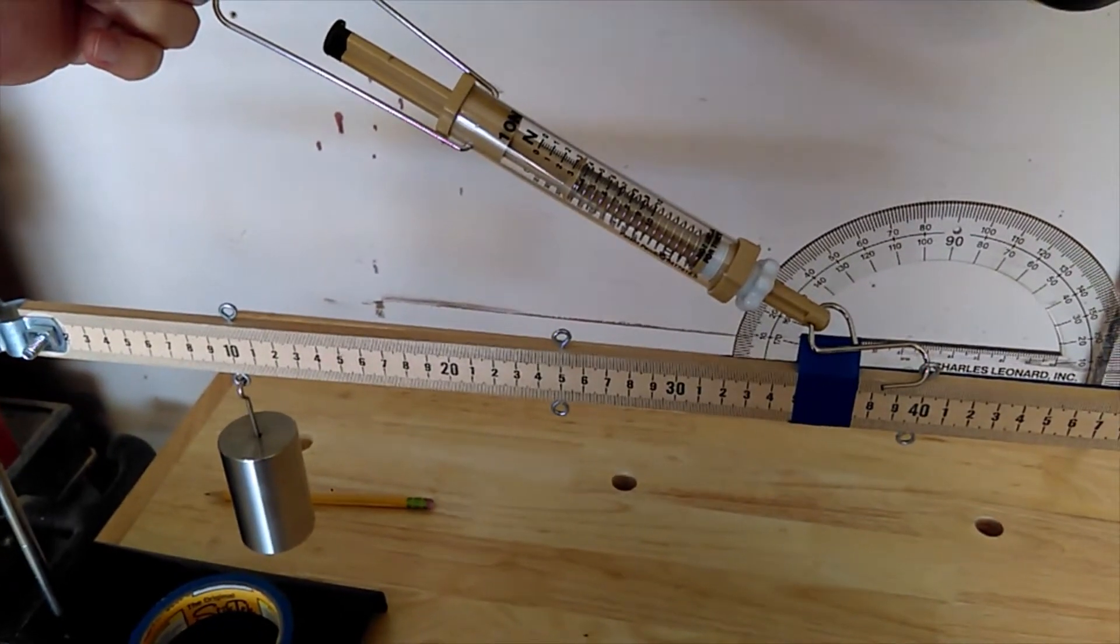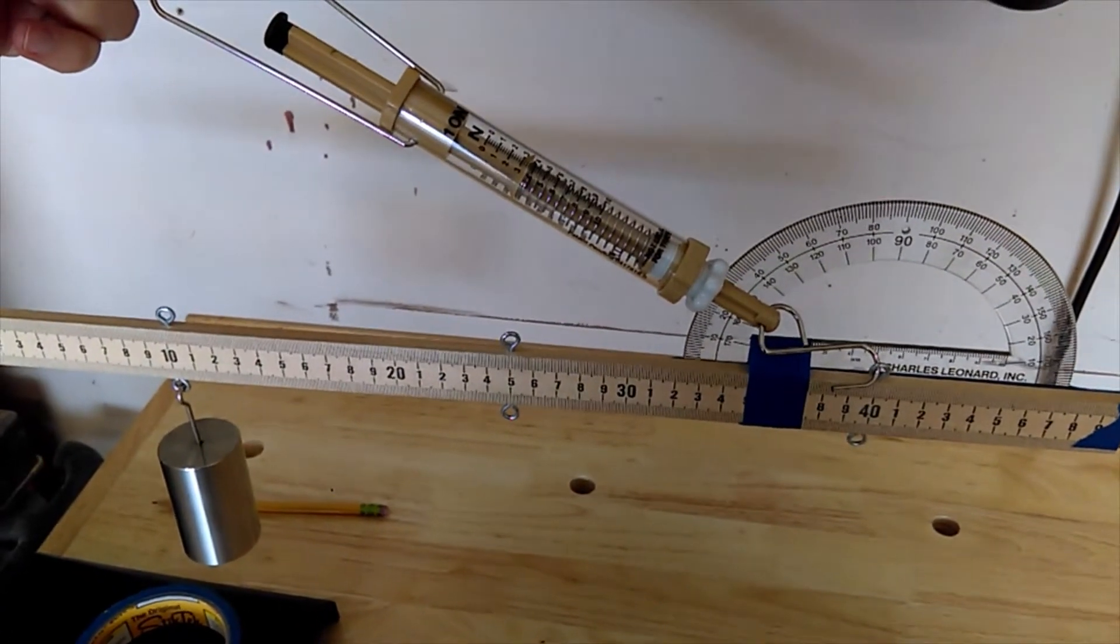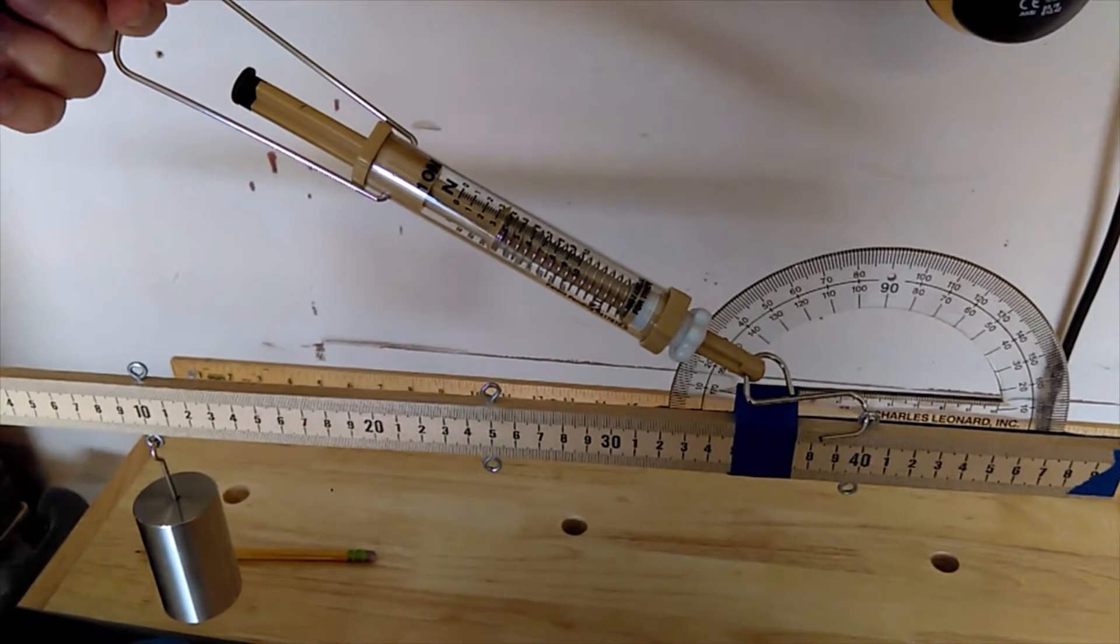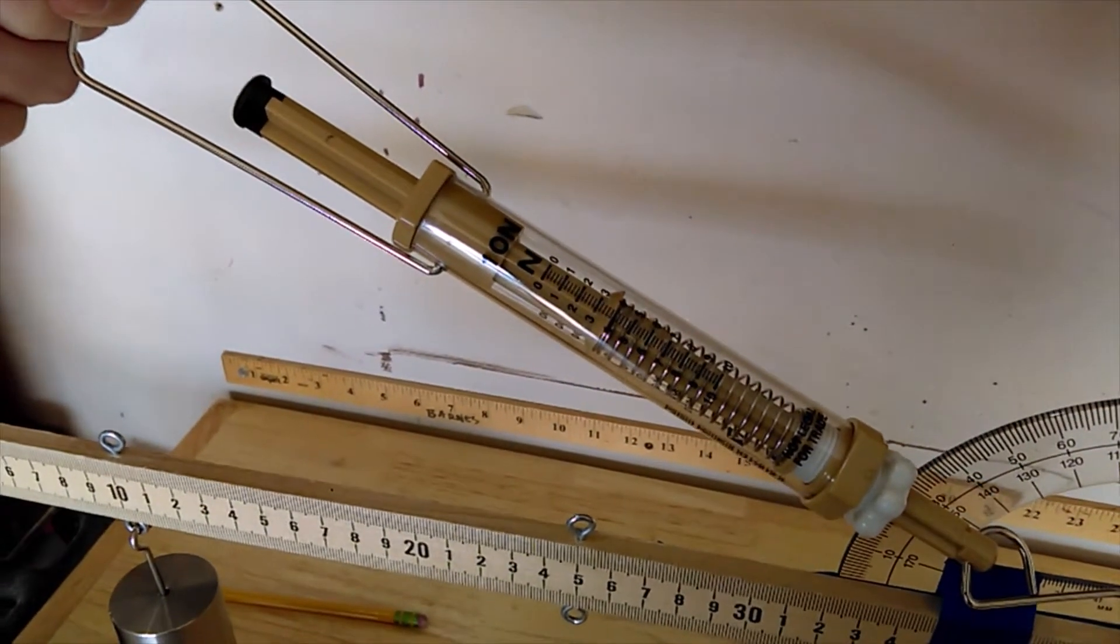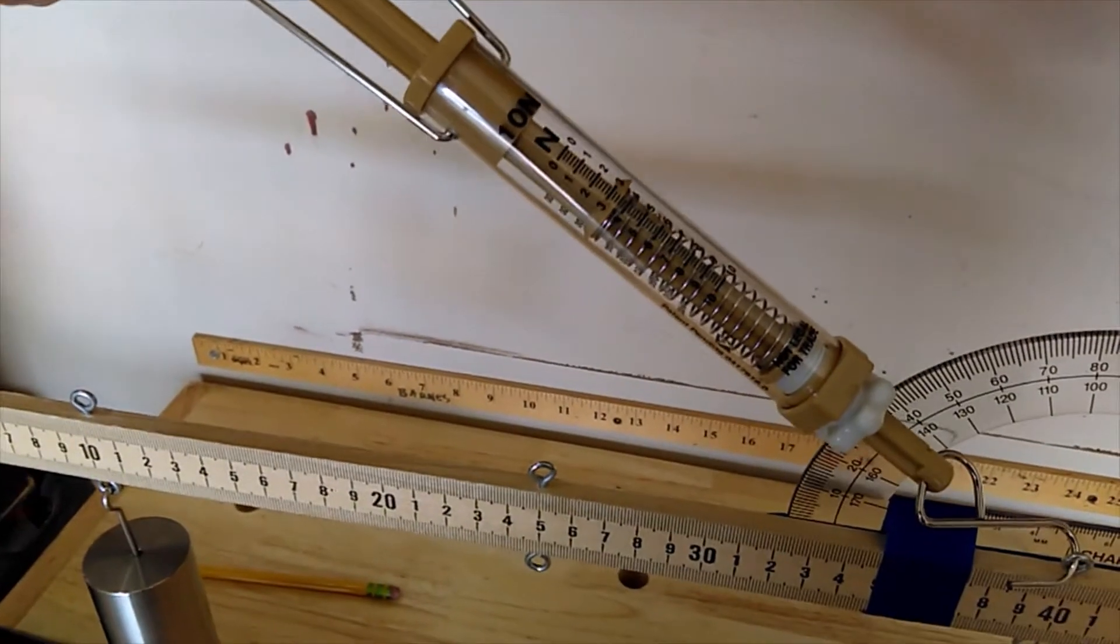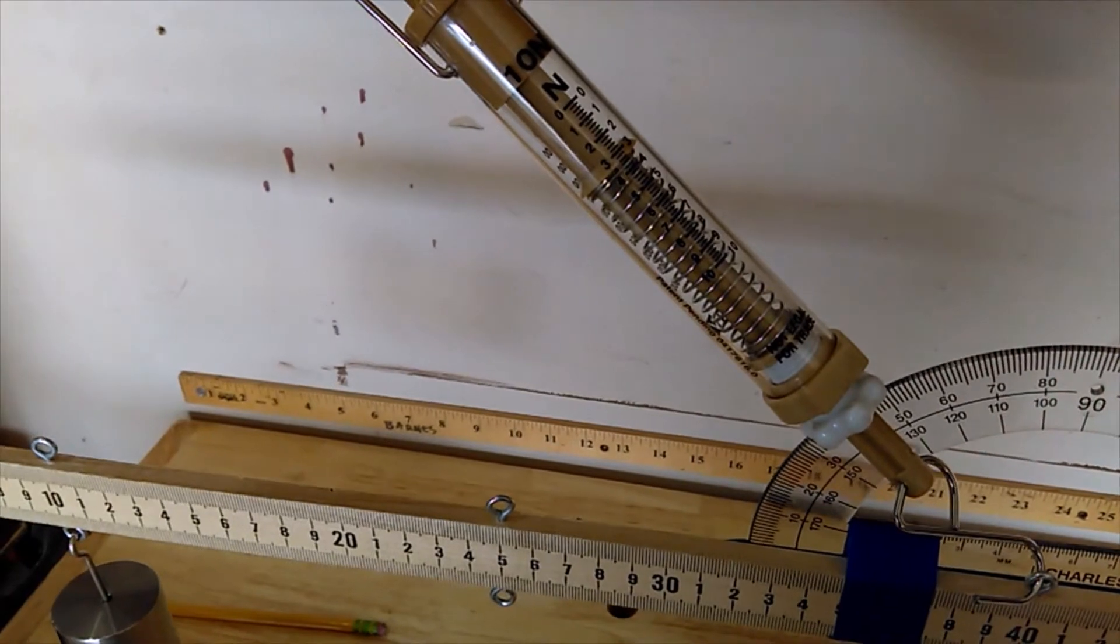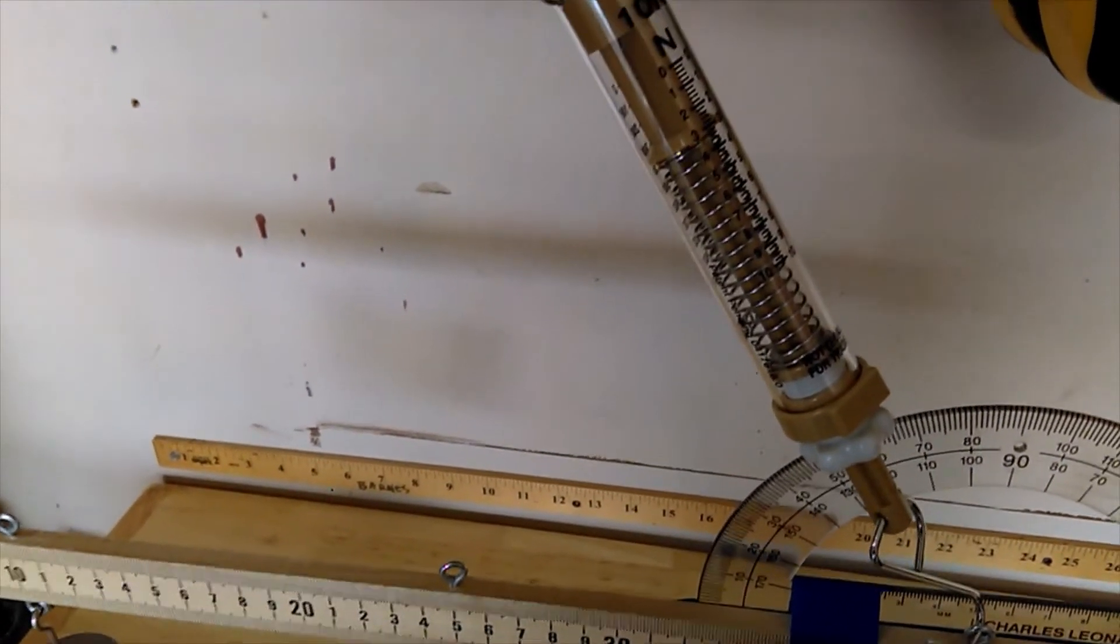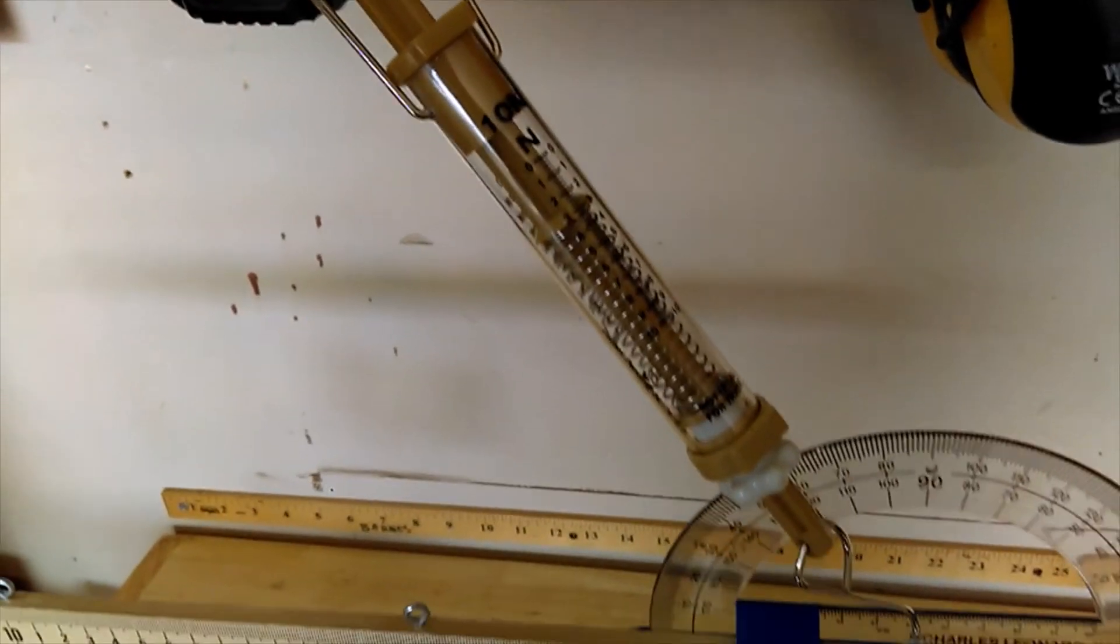Ready for test 7, 8, 9. Mass at 10 centimeters, spring scale clipped at 40. So at 30 degrees, 3.8 newtons. 45 degrees, we're at 3.4 newtons. And then at 60 degrees 3.2 newtons.